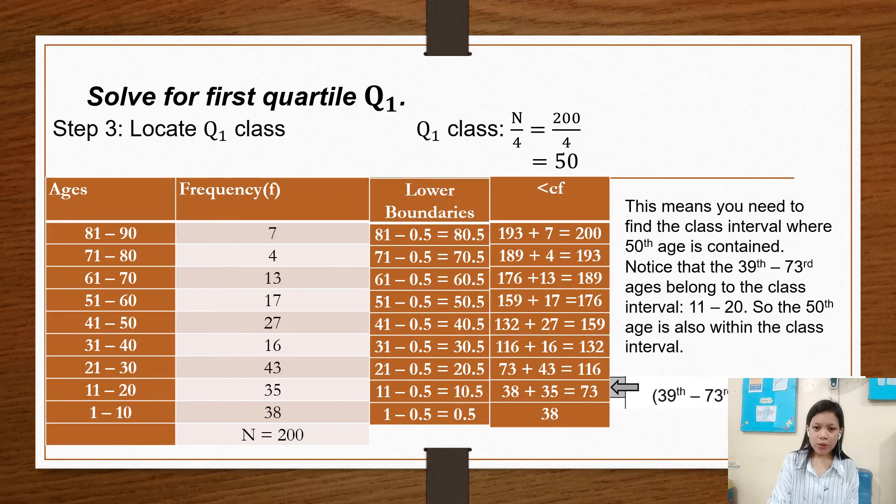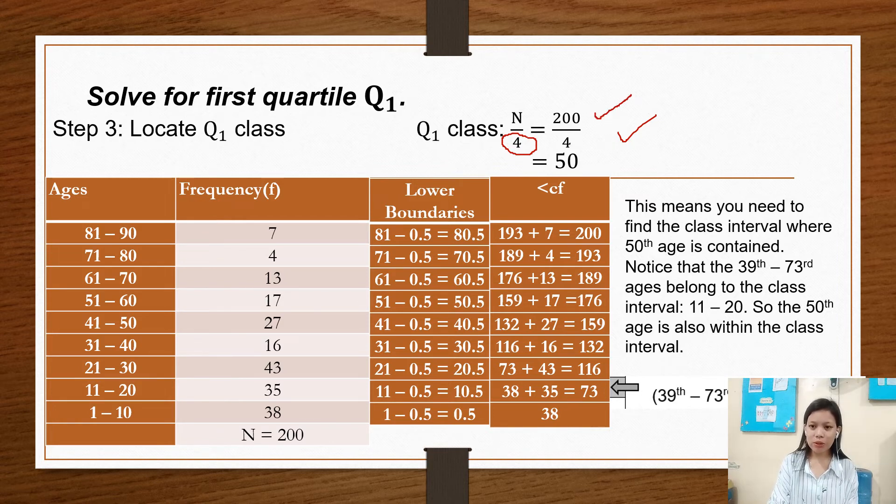Third is you have to locate Q sub 1 class. So in finding the Q sub 1 class, we have to find N over 4. 4 represents the quartile which is divided into 4 equal parts. So our N or the total number of data is 200 over 4. So the answer for Q sub 1 class is 50.